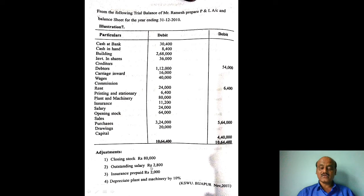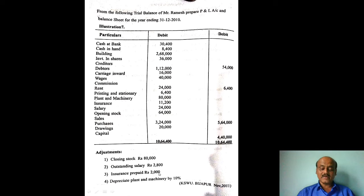Outstanding salary treatment: profit and loss debit side — salary added. Outstanding salary also appears on the balance sheet liability side. Insurance prepaid: insurance less in profit and loss — prepaid insurance is an asset on the balance sheet.